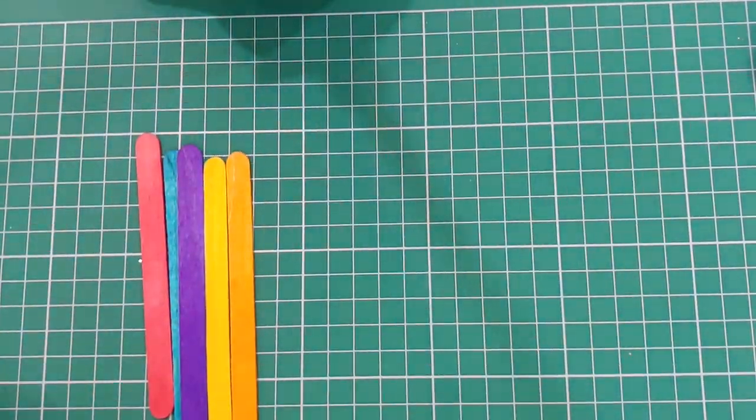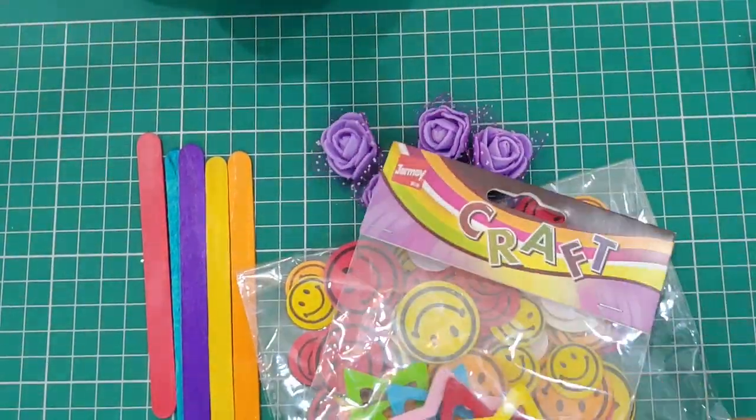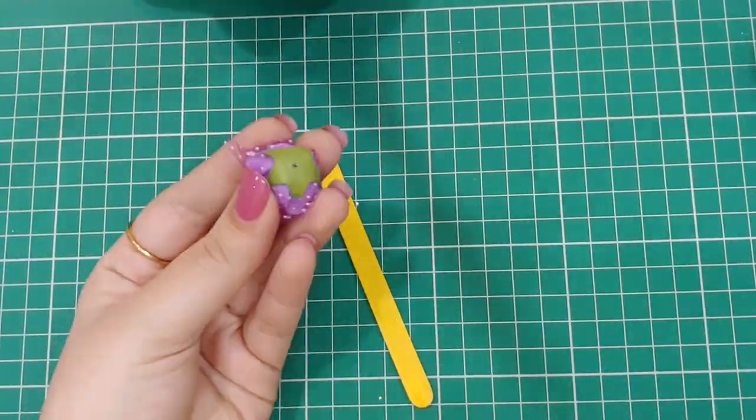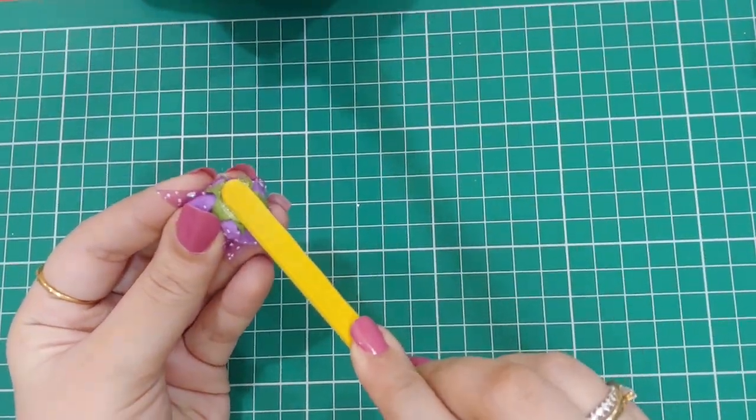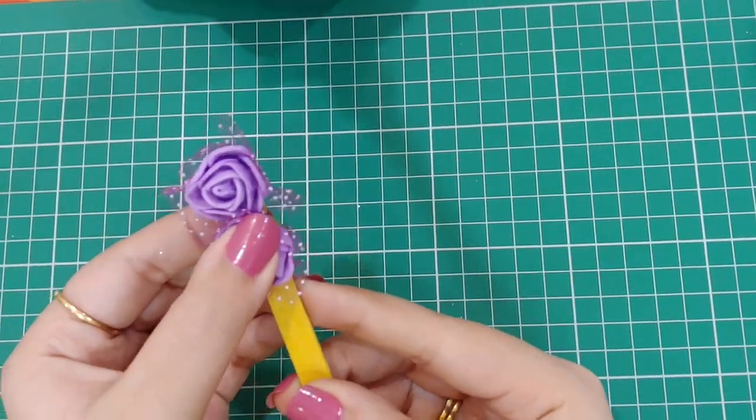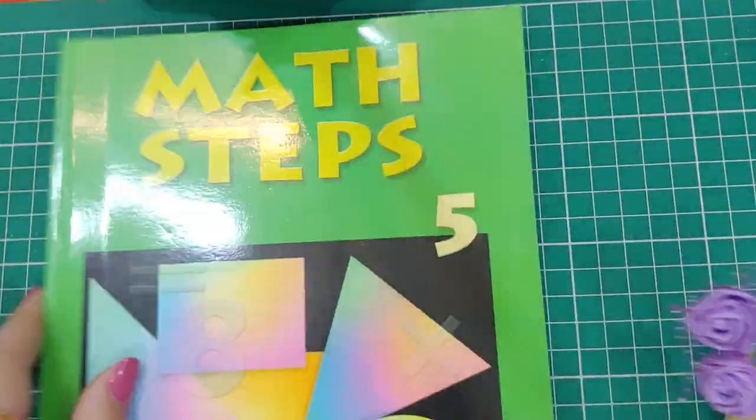For the next ones you need some colored ice cream sticks, foam flowers, stickers, foam stickers, smileys, and hot glue gun. All you have to do is just decorate these ice cream sticks as you like. For the first one I am using foam flowers. I am sticking two foam flowers so that my ice cream stick looks a little pretty and my bookmark is done.